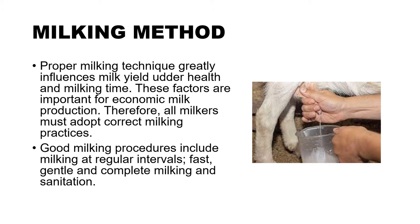When we say milking method, proper milking technique greatly influences milk yield, udder health, and milking time. These factors are important for economic milk production. Therefore, all milkers must adopt correct milking practices. If your milking technique is correct, this will increase your yield and milk production. If not, not all the milk will come out, so your production will be lower. If you are involved in dairy farming, you need to adopt correct milking practices.